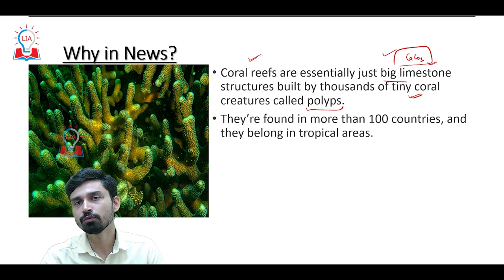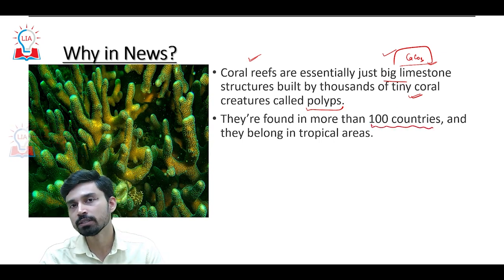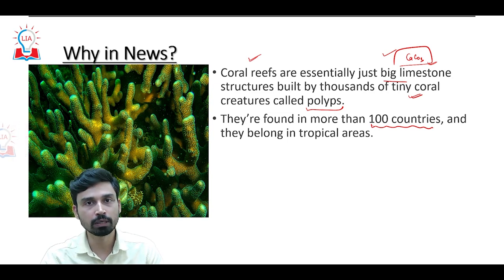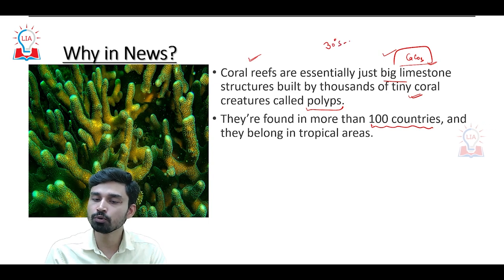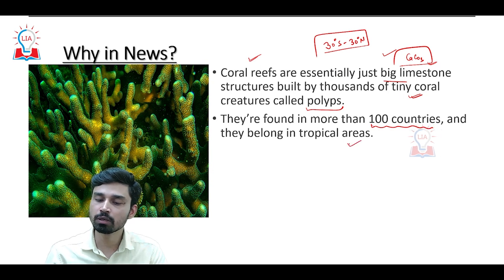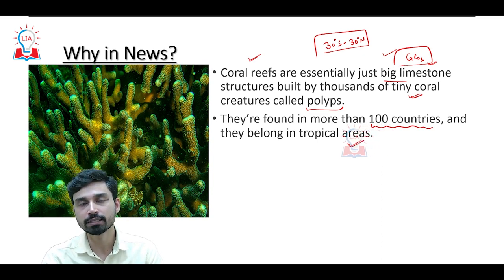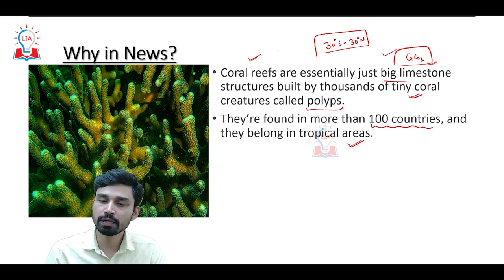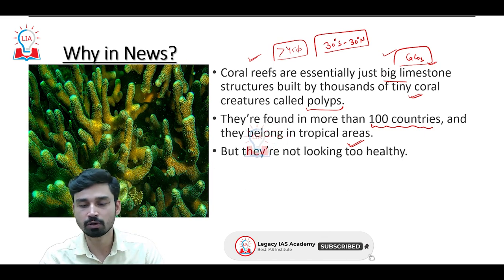As far as distribution is concerned, coral reefs are found in more than 100 countries across the world. However, since they cannot survive in very cold temperatures, most coral reefs are distributed between 30 degrees south and 30 degrees north latitude — in other words, largely concentrated in the tropical areas of the ocean. Looking at three countries specifically — Indonesia, Philippines, and Australia — more than 45 percent of the global corals are concentrated around the coastlines of these three countries alone in the tropical zone.